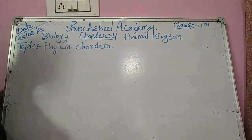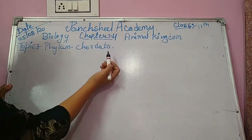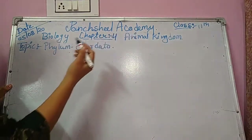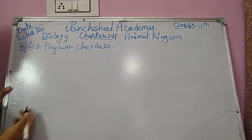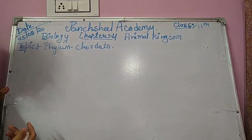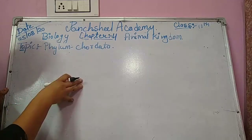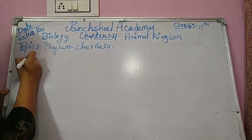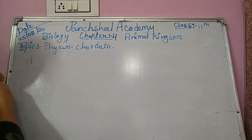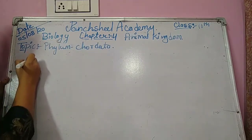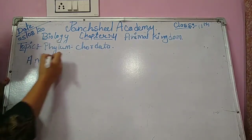Hello dear students. Last we discussed about Class 11th Biology, Chapter number 4, Animal Kingdom. Last we were discussing about Phylum Chordata, their divisions and their classes. In today's class we are discussing about another one, that is Amphibians.